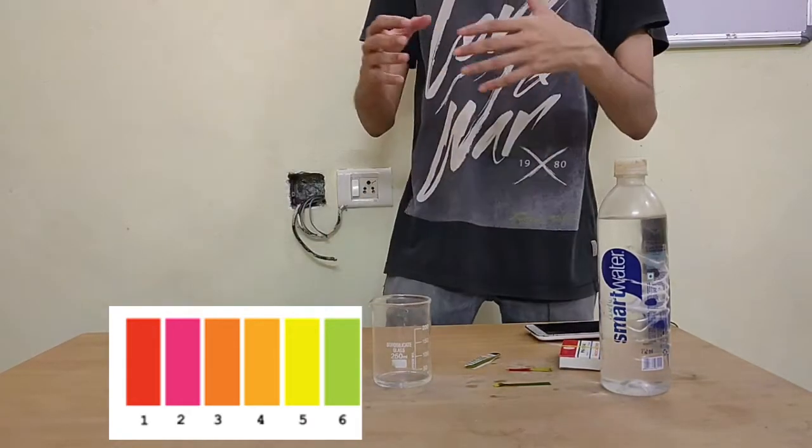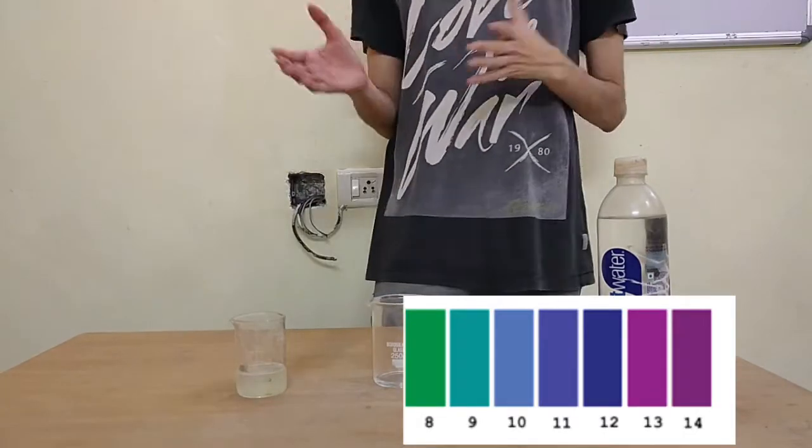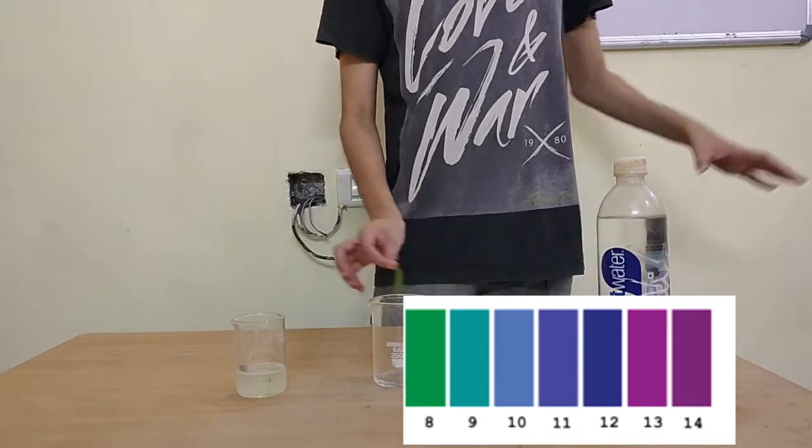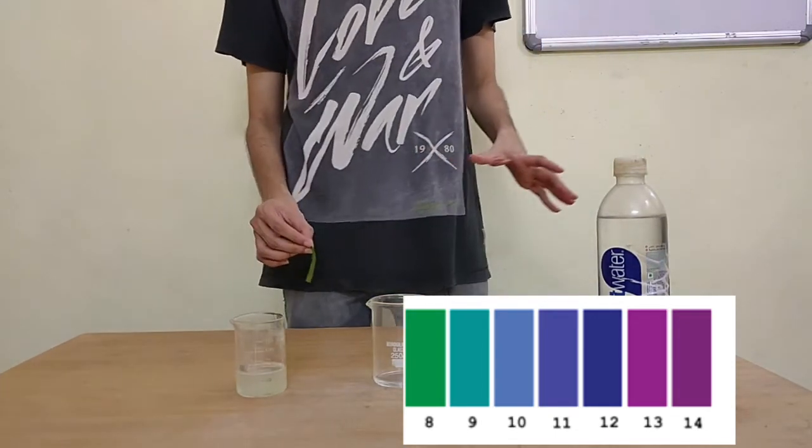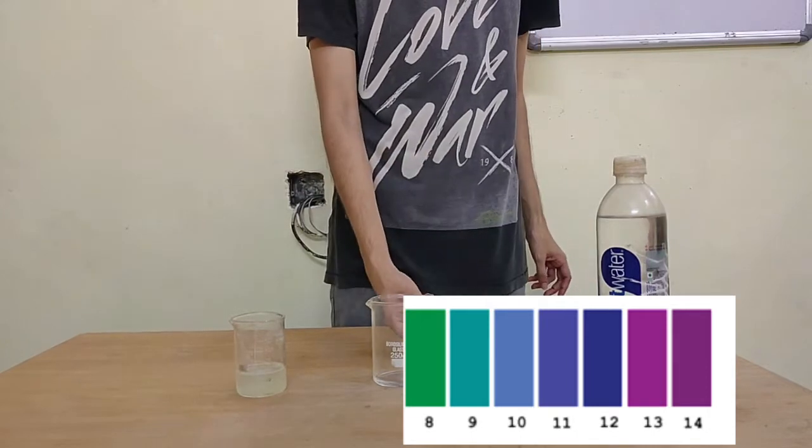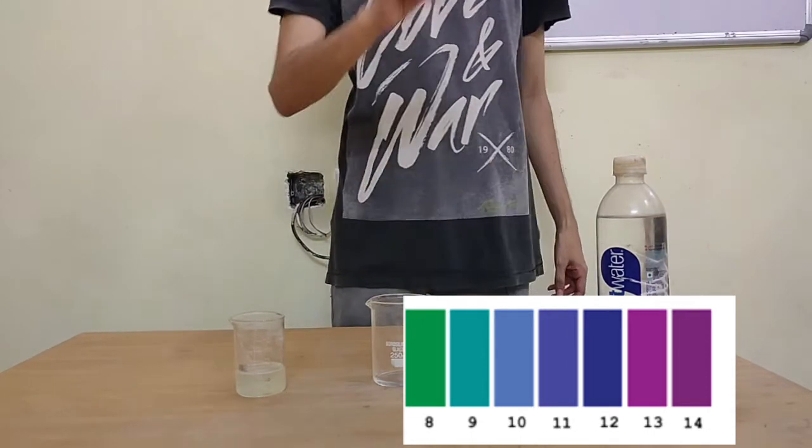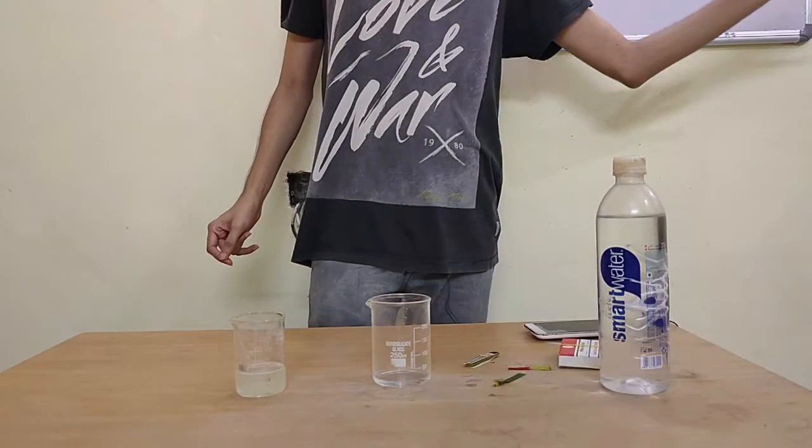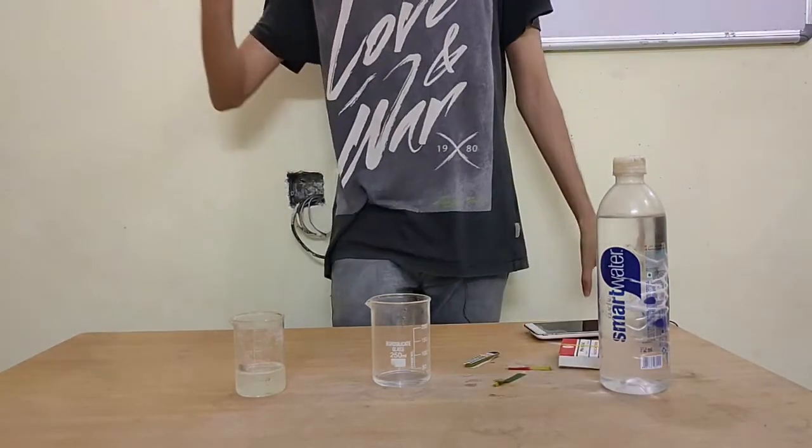The same way, anything above 7 or between 7 and 14 is definitely a base. This green thing which had a number around 10 is definitely a base. On one side below 7 is acid, on the other side above 7 is base.